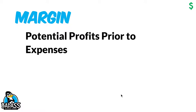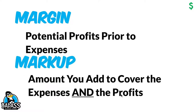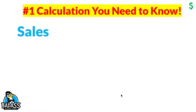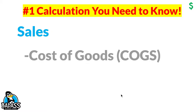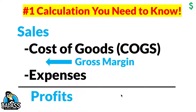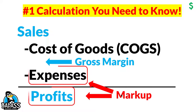Your gross margin is the potential profits prior to expenses. Your markup is the amount you add to cover your expenses plus any potential profits. Here's a calculation that helps teach this: Sales minus cost of goods minus expenses equals profits. Gross margin pops in as: Sales minus cost of goods equals your gross margin, which is your potential profit dollars. Your markup must cover both your other business expenses as well as your potential profit — that's what you're marking up for.